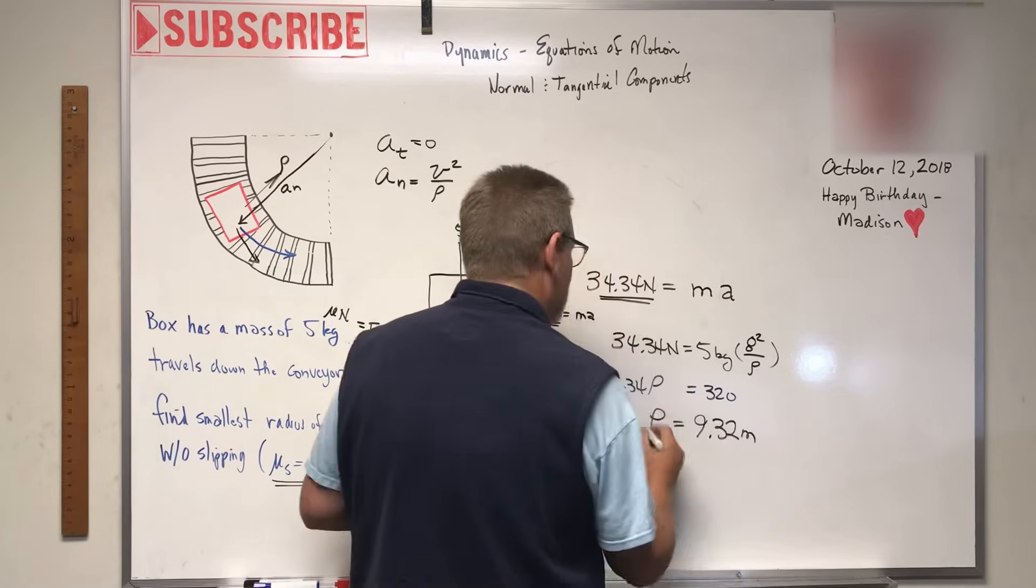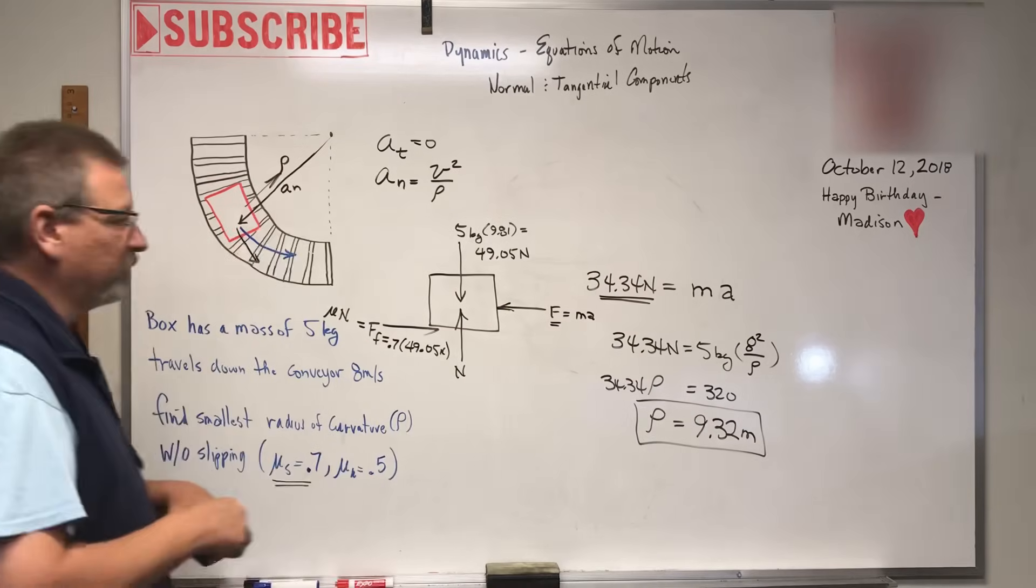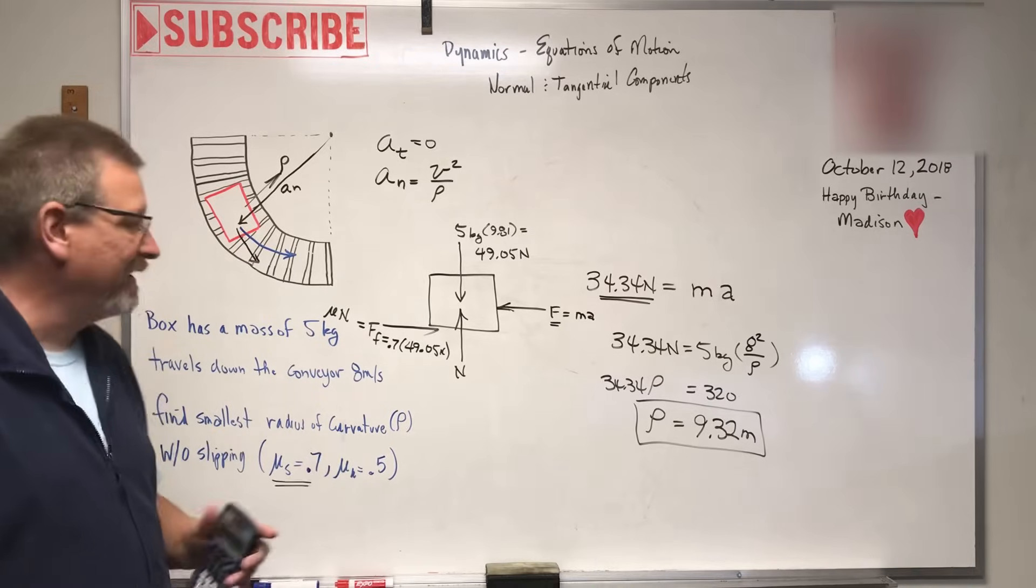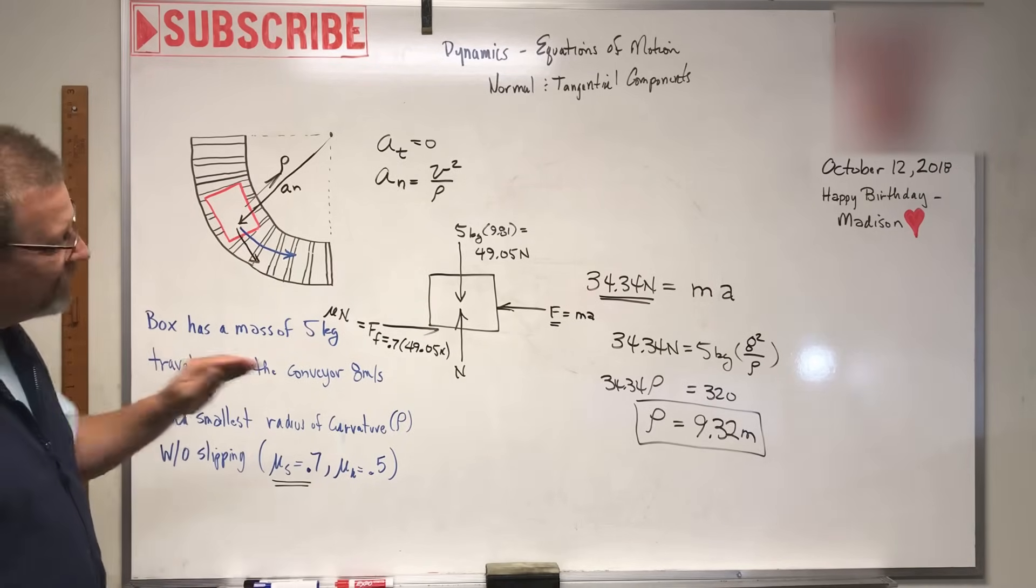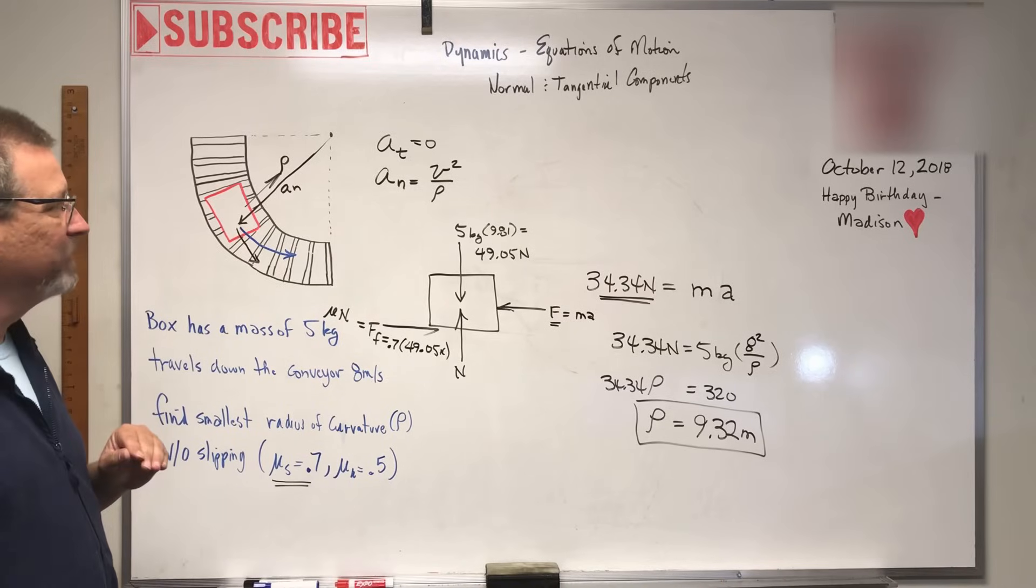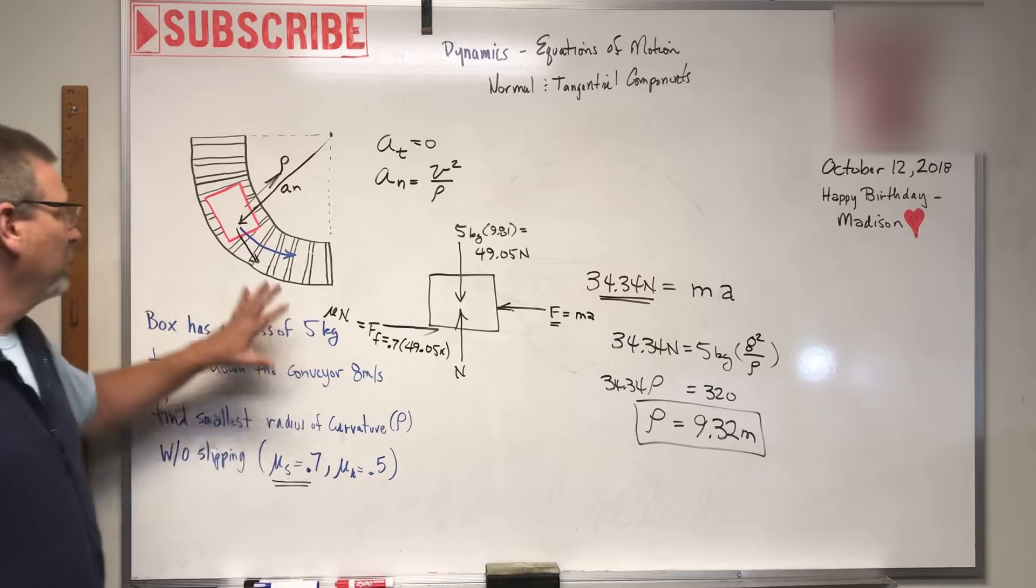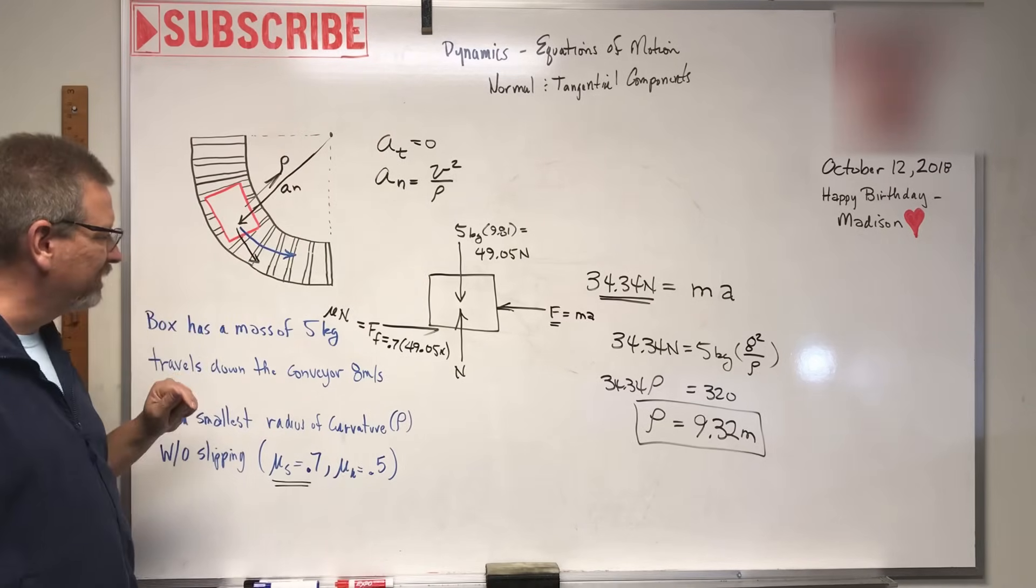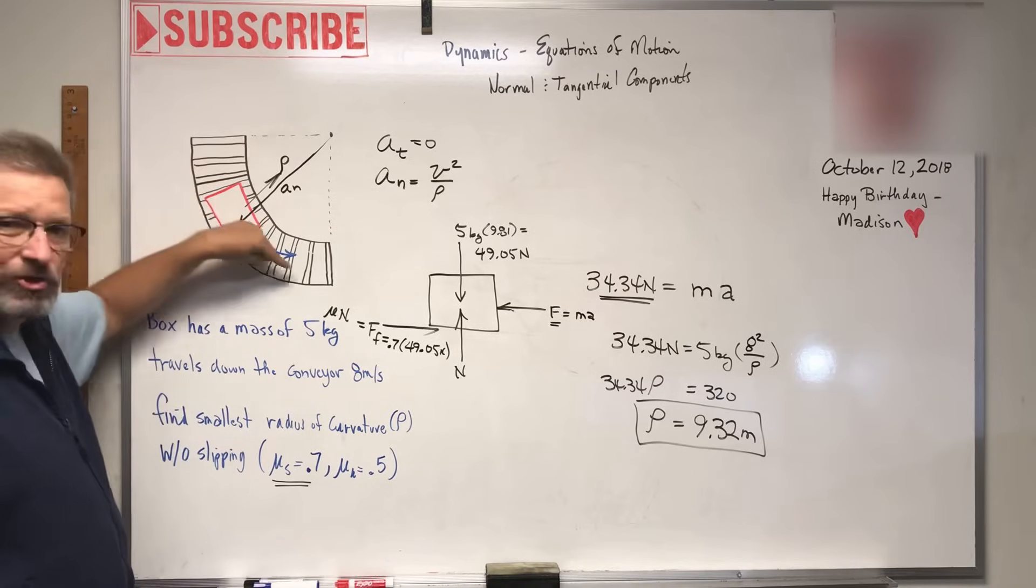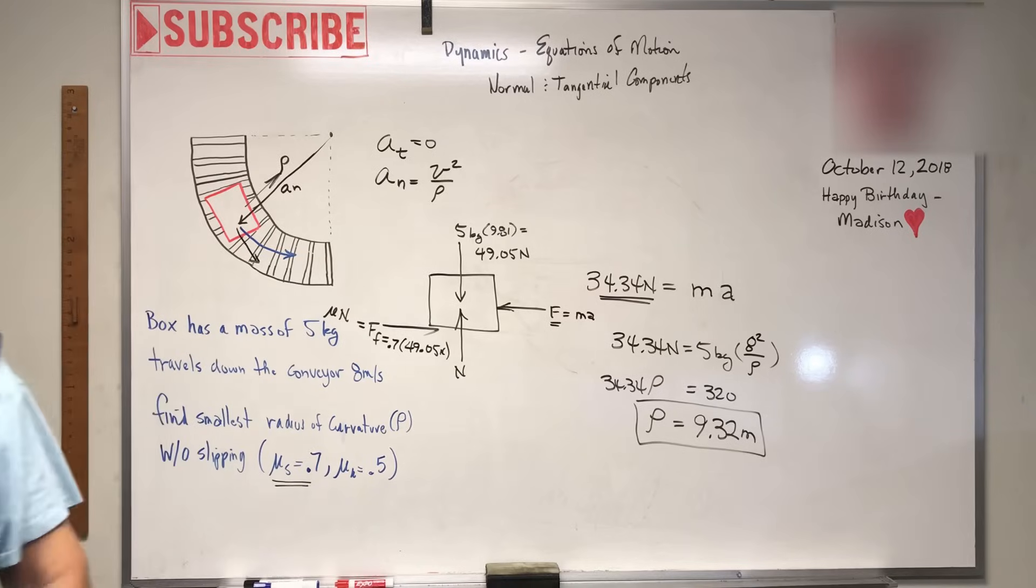The radius of curvature would have to be 9.32 meters. If it's anything smaller than that, the box is going to slide off, so it has to be at least 9.32 meters. I hope this was helpful. We'll do a couple more of these in the next video to make sure we understand this tangential and normal acceleration around the corner.